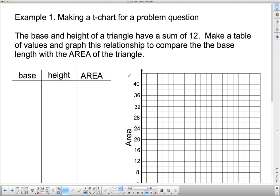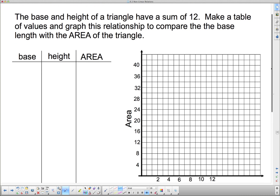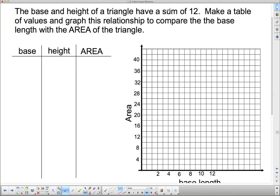So let's have a look at if I can make a t-chart for an example. And then graph it to see if it's linear or non-linear. So making a t-chart for a problem question. The base and height of a triangle have a sum of 12. Make a table of values and graph this relation to compare the base length with the area of the triangle. Now we do need to remember that to find the area of the triangle, we take the base, multiply it by the height, and divide it by 2.